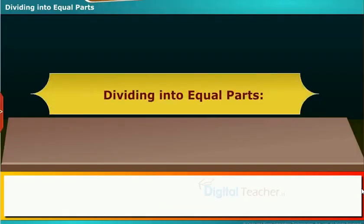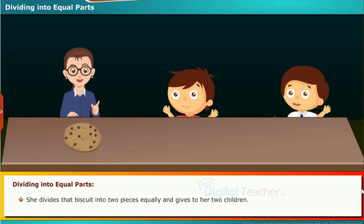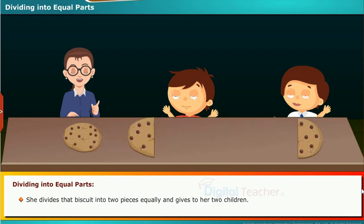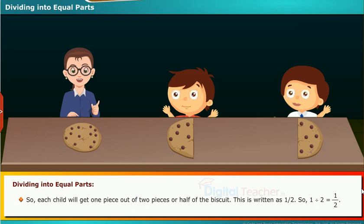Let us see how to divide things into equal parts. Lakshmi has one biscuit. She divides that biscuit into two pieces equally and gives them to her two children. So each child will get one piece out of two pieces, or half of the biscuit. This is written as 1 by 2. So, 1 divided by 2 is equal to 1/2.